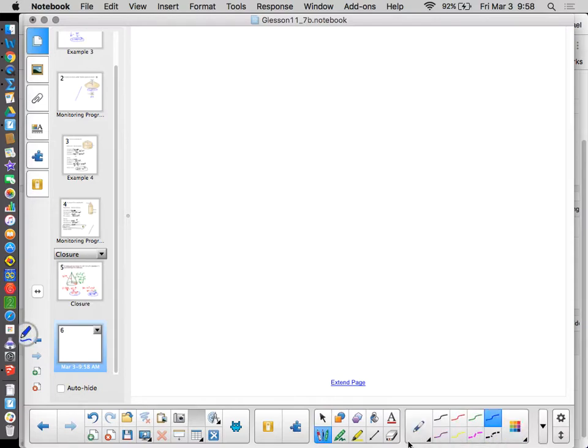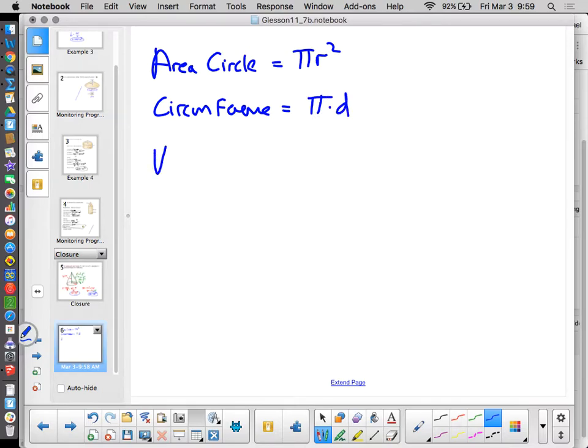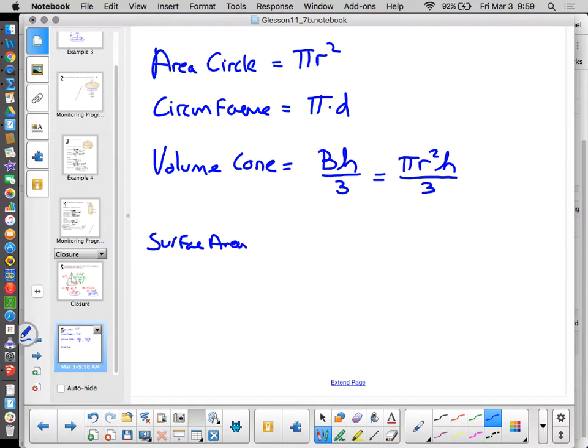So let's just kind of summarize very quickly a couple formulas we need to know. The area of a circle is pi r squared. And if you don't know these, you might want to make flashcards to have these. The circumference of a circle is pi times diameter. The volume of a cone is base area times height divided by 3. But since the base is automatically a circle in a cone, that's pi r squared times height over 3. The surface area of a cone of a right cone is pi r squared plus pi r times l.